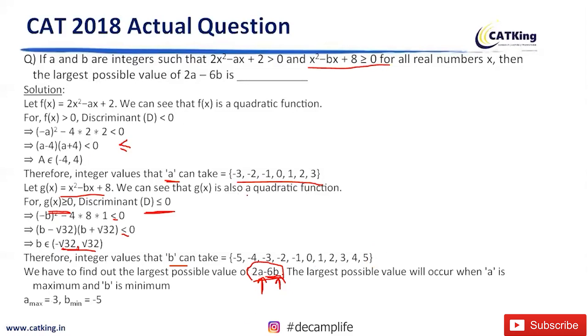So the maximum value of A we have found out is 3, and minimum value of B is -5. So the largest possible value of this is - substituting the values, we have got the answer as 36.